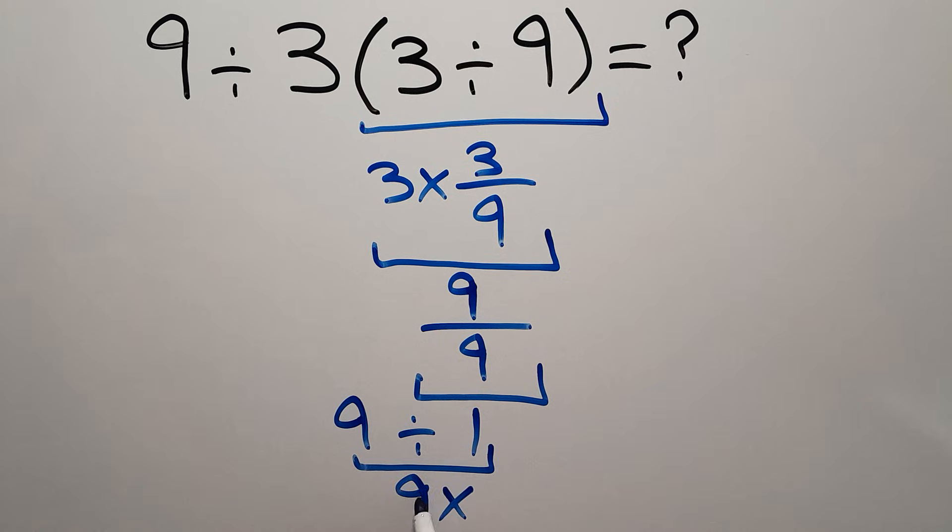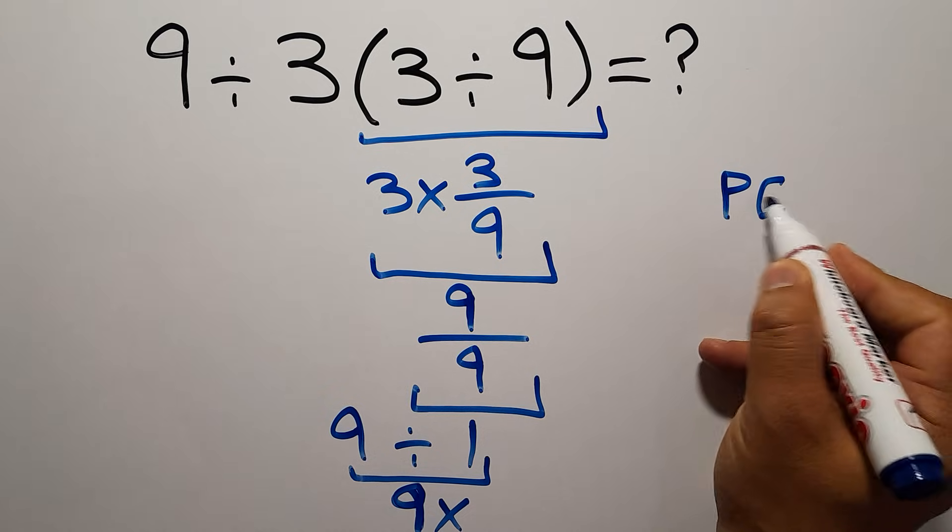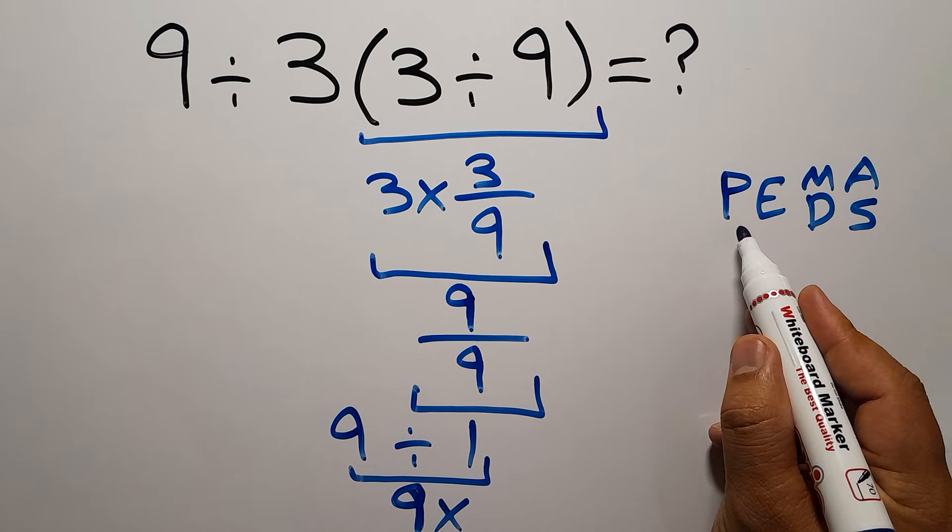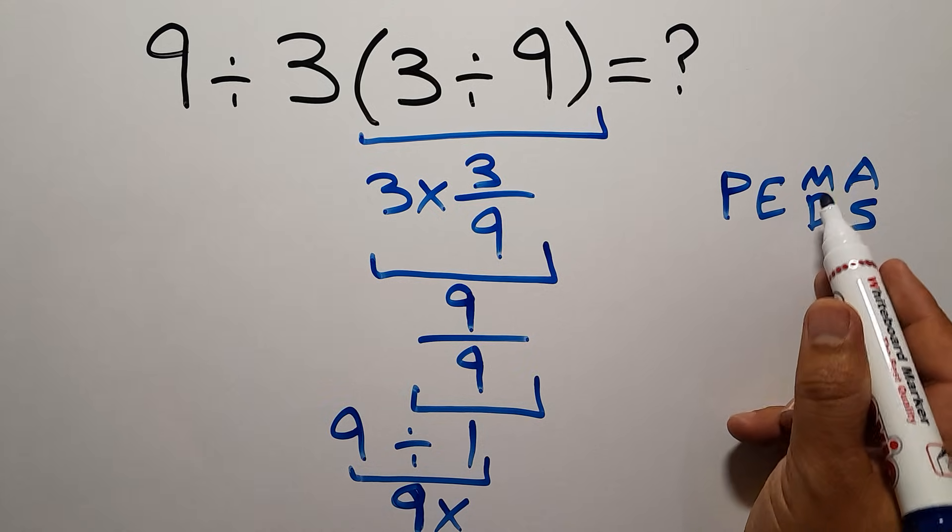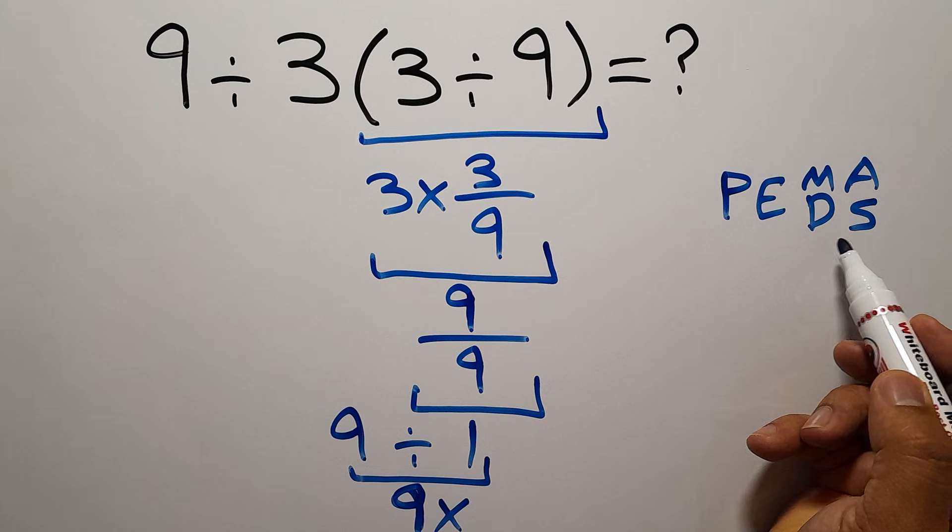But this answer is not correct. Because according to the order of operations, which is PEMDAS, P stands for parentheses, E stands for exponents, M and D stands for multiplication and division, and A and S stands for addition and subtraction.